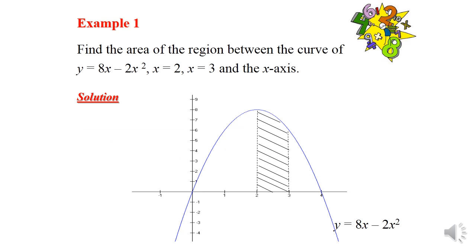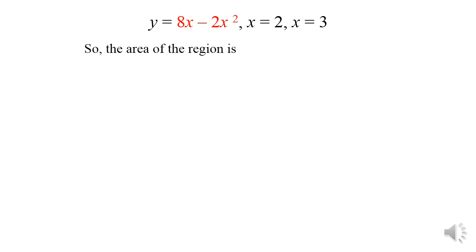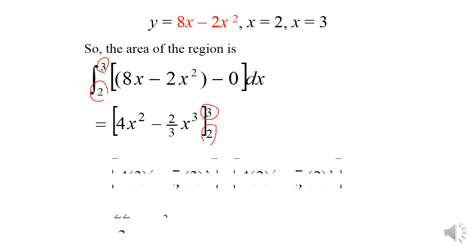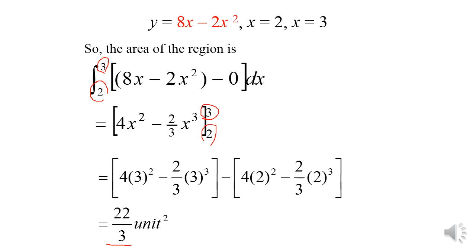Example 1: Find the area of the region between the curve y = 4x minus 2x², x = 2, x = 3, and the x-axis. The area equals the integration of (4x minus 2x² minus 0) dx from 2 to 3. Integrating gives 4x² minus (2/3)x³ evaluated from 2 to 3, which gives the answer 22/3 square units.